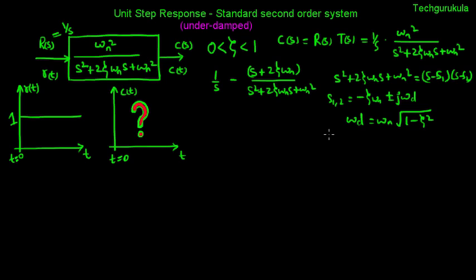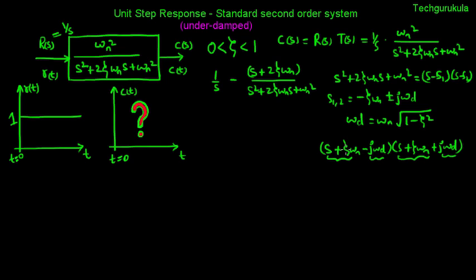Substituting s1 and s2 into the equation, it can be written as s plus zeta omega n minus j omega d, times s plus zeta omega n plus j omega d. This is like a minus b times a plus b, which equals a squared minus b squared. So we get s plus zeta omega n, whole squared, minus j squared omega d squared. Since j squared is minus 1, this becomes s plus zeta omega n whole squared plus omega d squared.